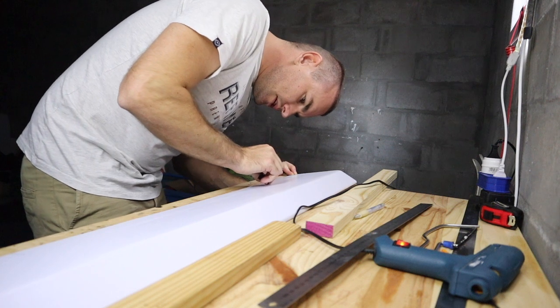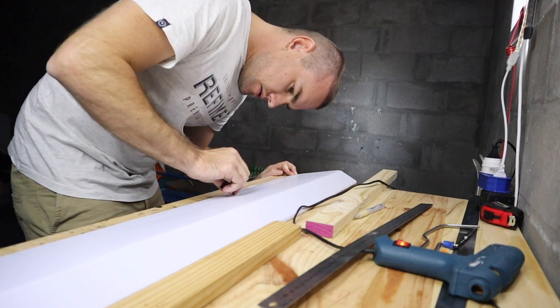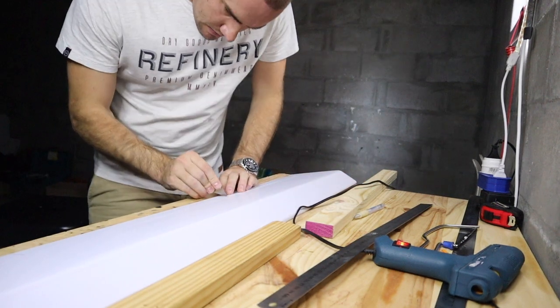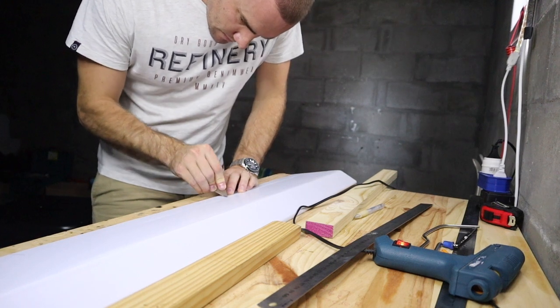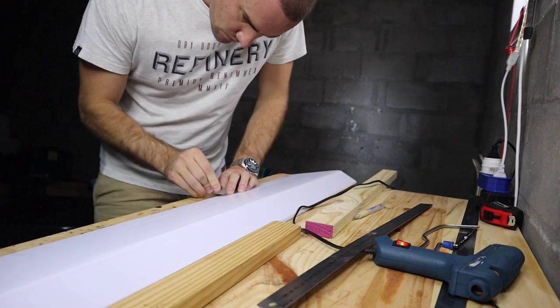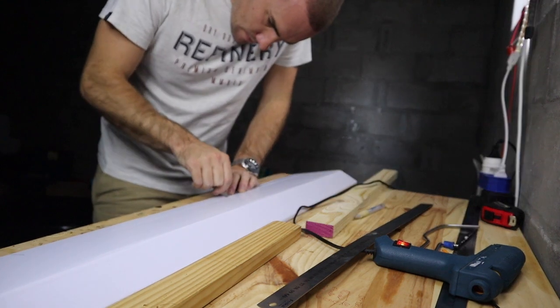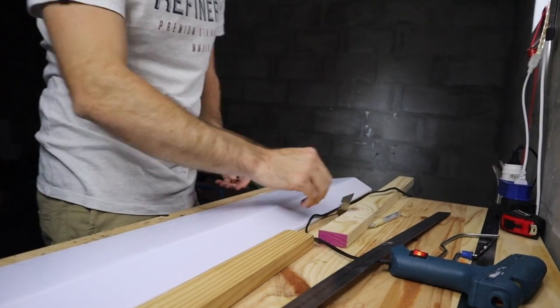I'm just going to cut these ailerons free, just through one layer, just the top layer of the wing surface. Then cut all the way through, and then do the same on the other side.